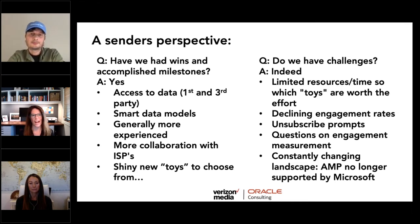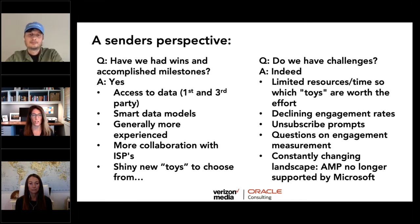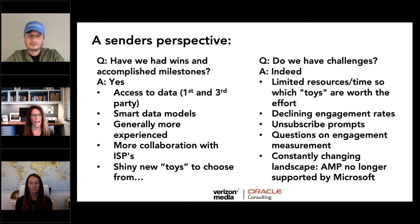From the sender perspective, we've had wins and challenges. Senders have had more access to valuable first and third-party data than ever before. We've evolved smarter data models, are more sophisticated, and highly effective in creating deliverability stability. There's been a broad spectrum of knowledge with email deliverability — most senders have experienced a dire deliverability issue that grabbed leadership's attention. While senders are educated on managing better reputation, leadership often still doesn't understand, requiring constant education.